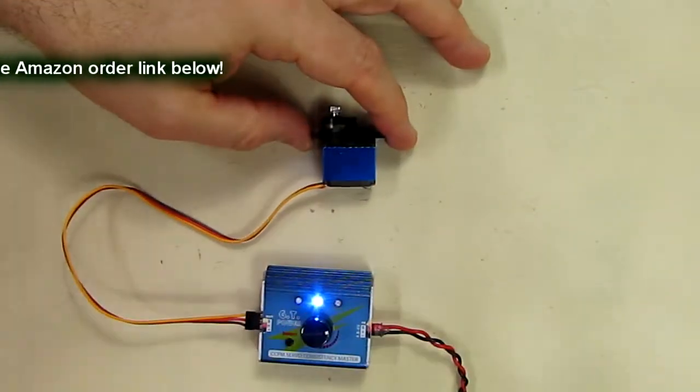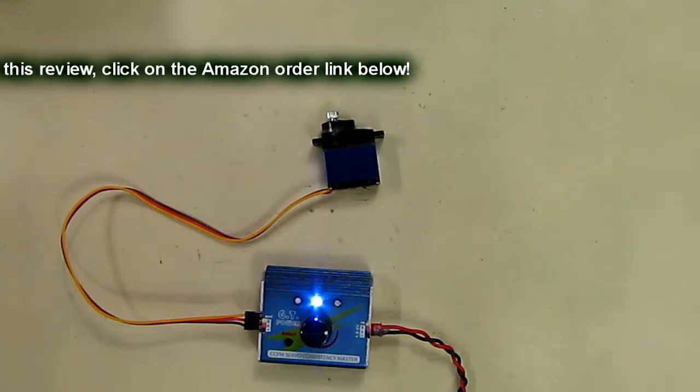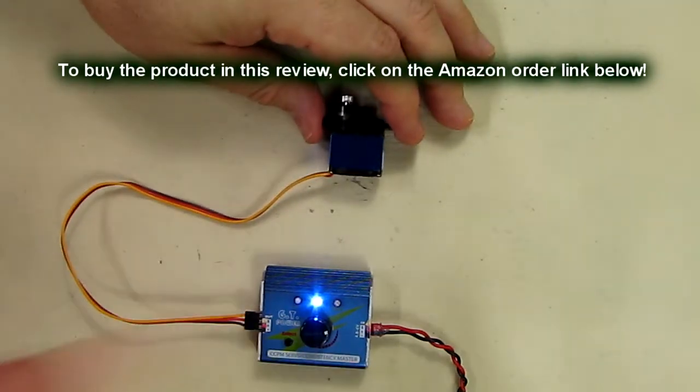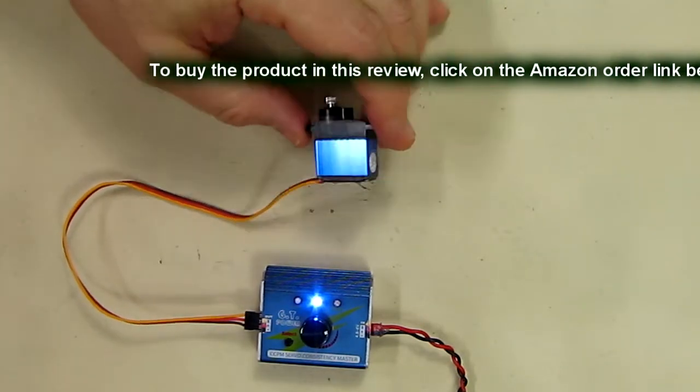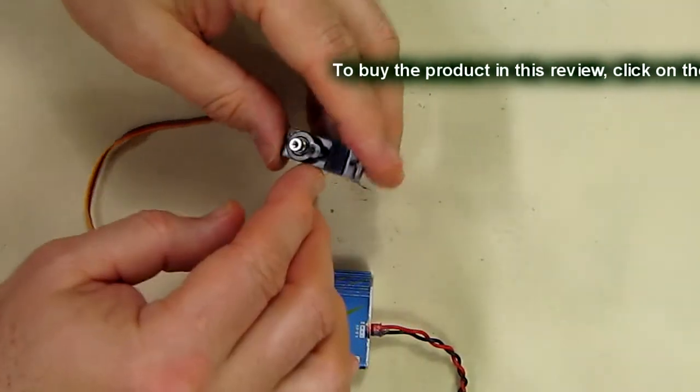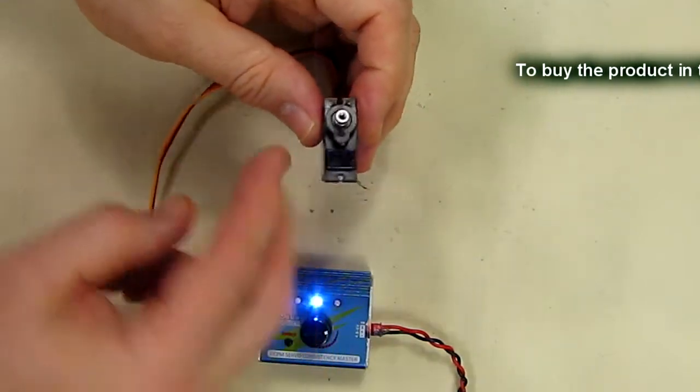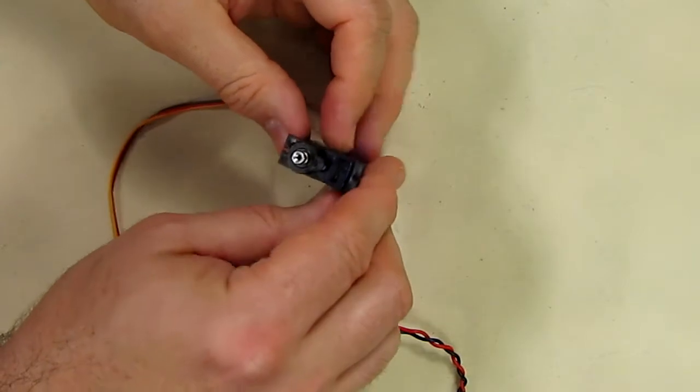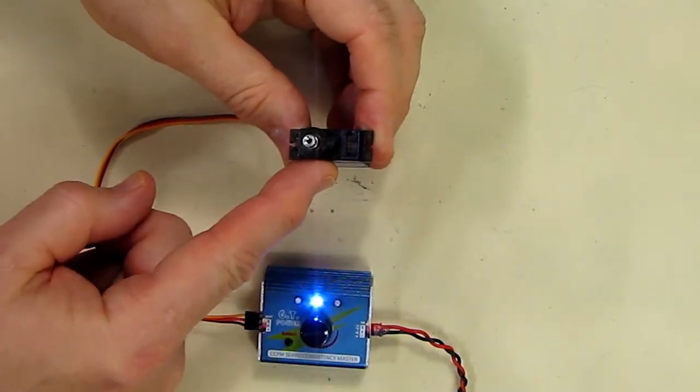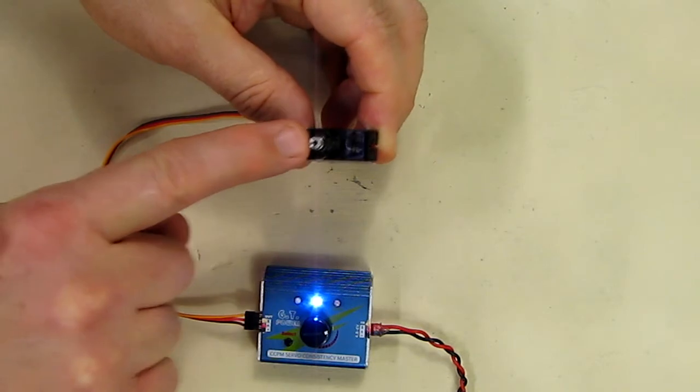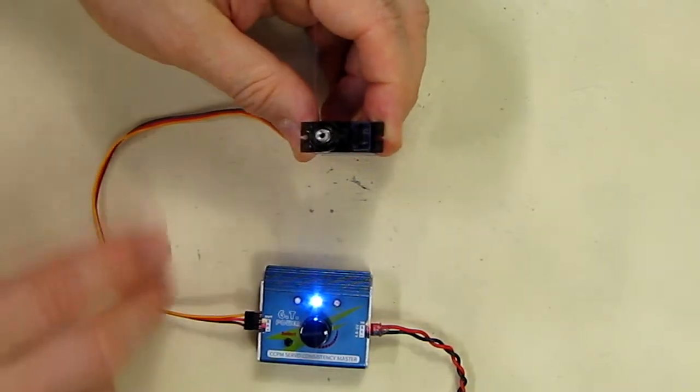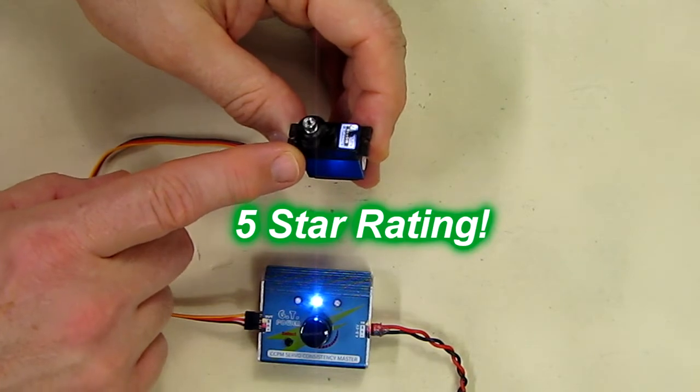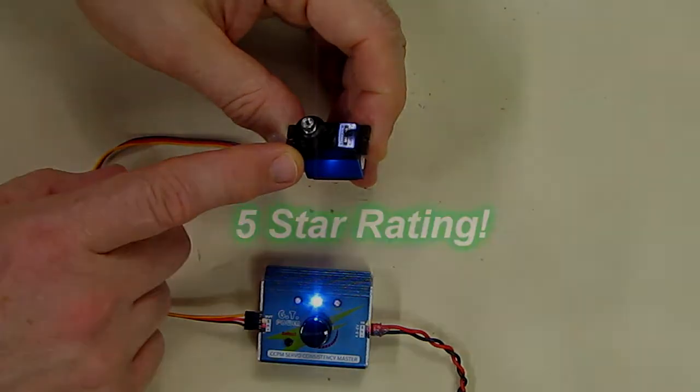So what do I think about this TowerPro 14 gram MG92B servo? Digital, high torque—I think this is a great value. This servo has a lot of torque for its size, very good cooling, ball bearings on the top and bottom, and its positional accuracy is really nice. I'm going to give this product a full 5-star rating on my channel. I hope this video review helped you with your buying decisions. Thanks for watching.